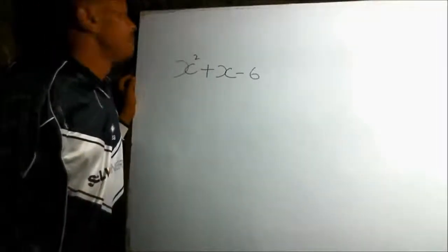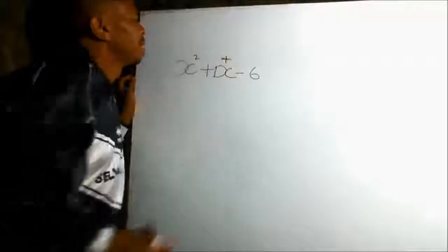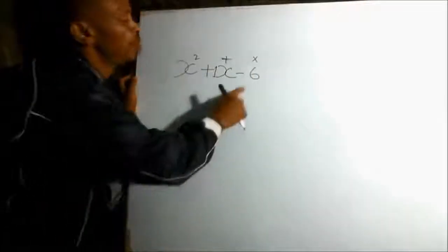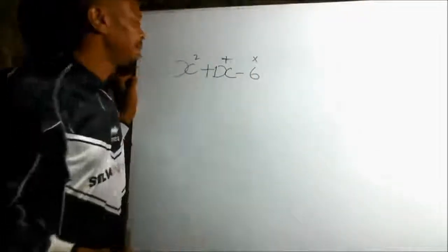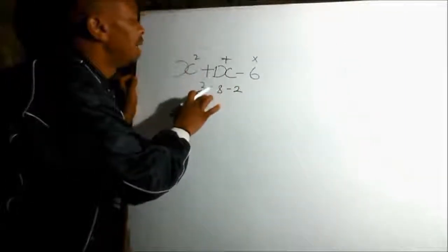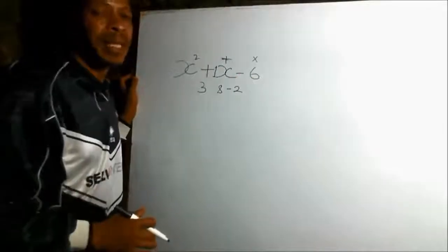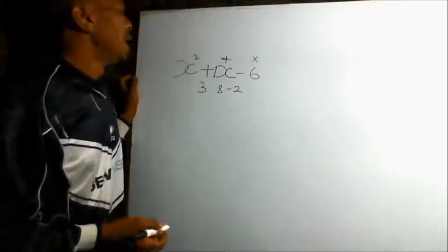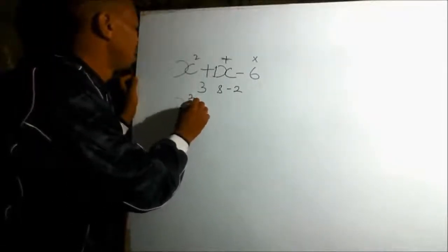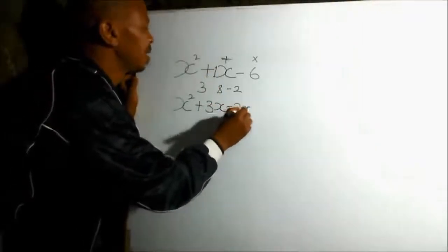When we factor this, remember here we have 1x. So we get two numbers such that when you add the two numbers you should get 1, which is the coefficient of x, and when you multiply the two numbers you should get the constant, which is minus 6. I will take 3 and minus 2: 3 minus 2 equals 1, and 3 times minus 2 is minus 6. Those are the numbers we need. We rewrite our quadratic expression as x squared plus 3x minus 2x minus 6.